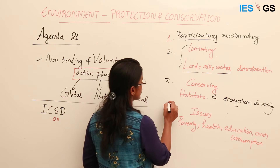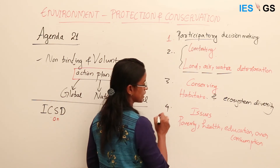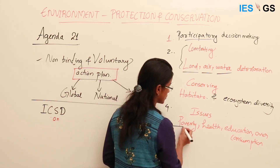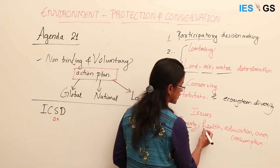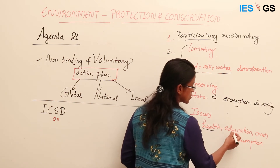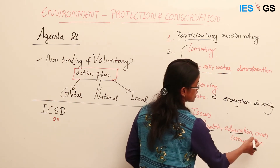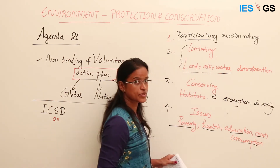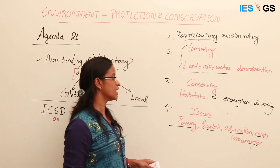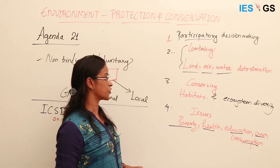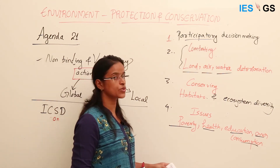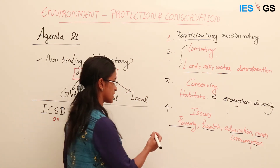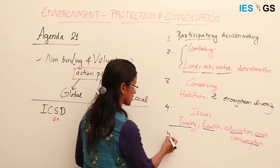Agenda 21 also deals with different global issues such as poverty, health issues, education, and the issue of over-consumption. These are different environmental and social issues that it seeks to address.